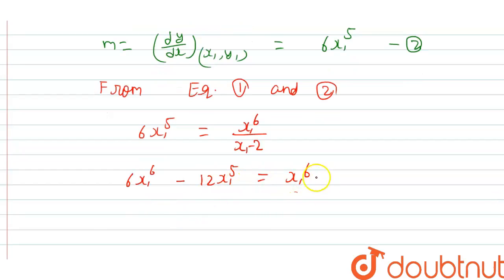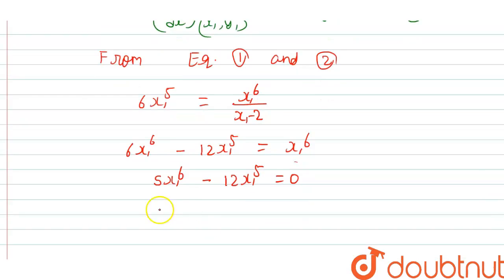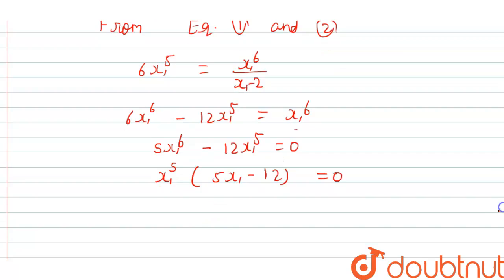So 6x1⁶ − x1⁶ = 5x1⁶ − 12x1⁵ = 0. Taking x1⁵ as common: x1⁵(5x1 − 12) = 0. From here, x1⁵ = 0 and 5x1 − 12 = 0.